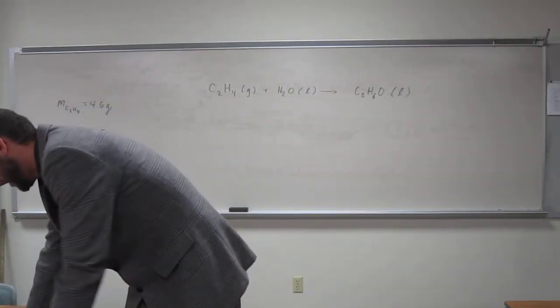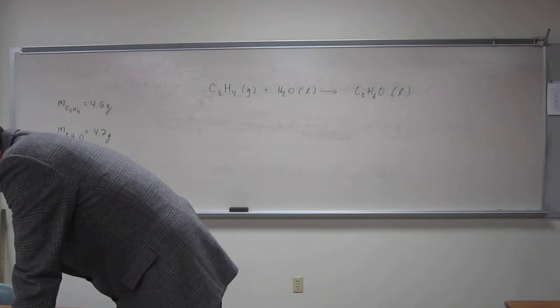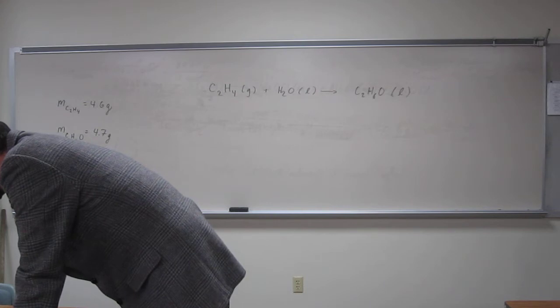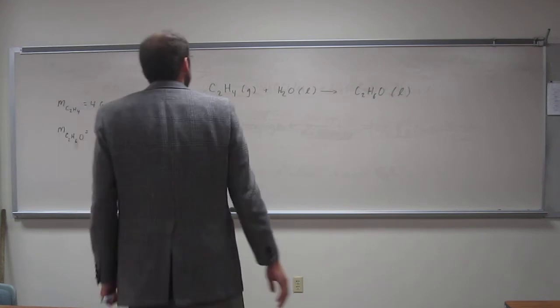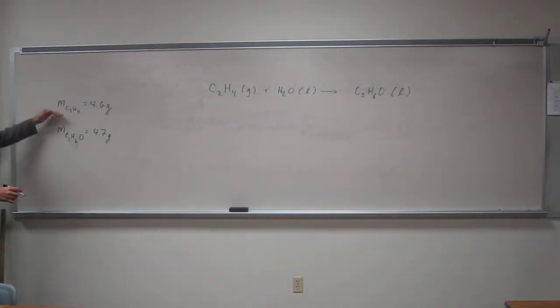Ethyl alcohol is prepared industrially by the reaction of ethylene, C2H4, with water. What is the percent yield of the reaction if 4.6 grams of ethylene gives 4.7 grams of ethyl alcohol? The reaction equation is written right here, and the masses are given right here.